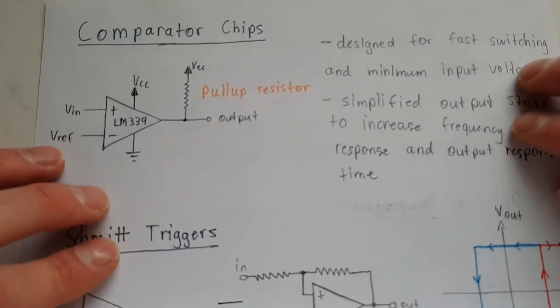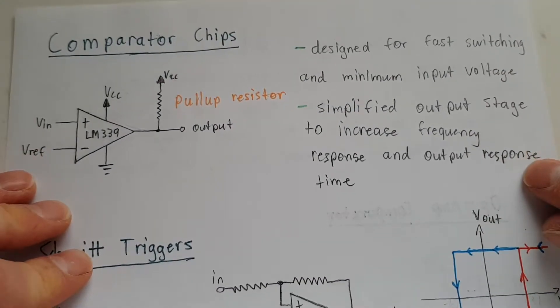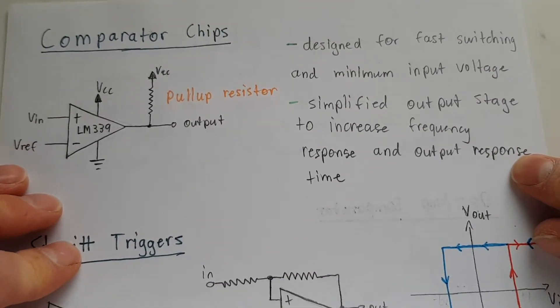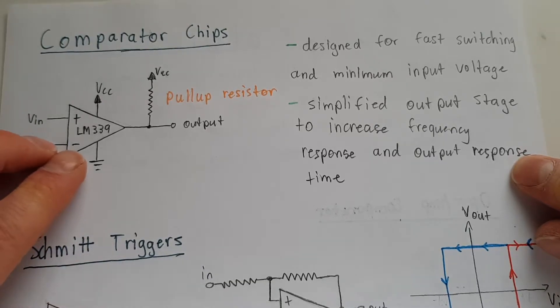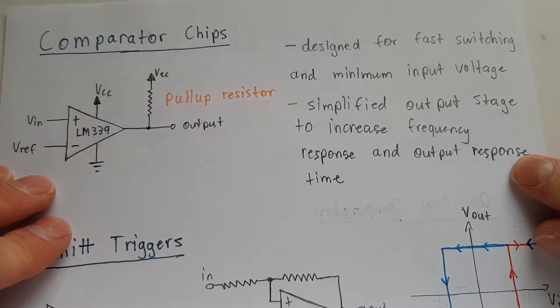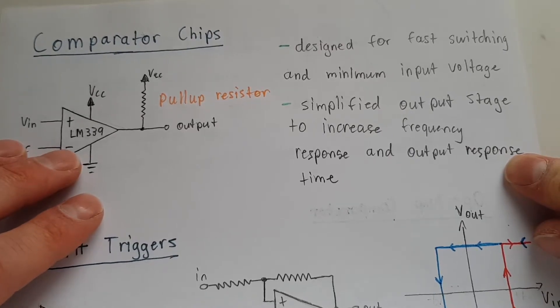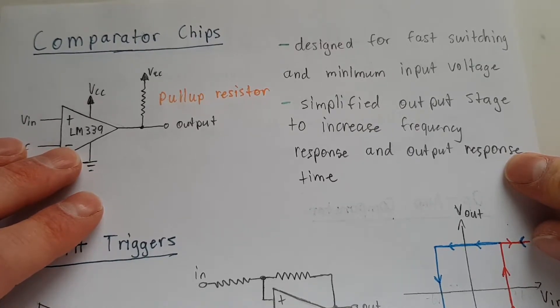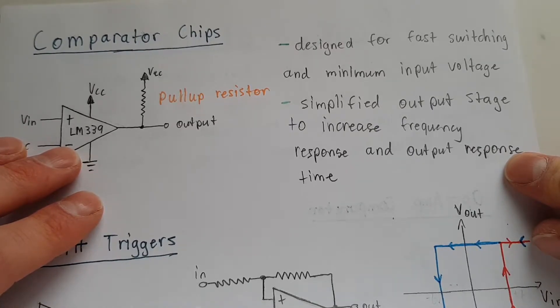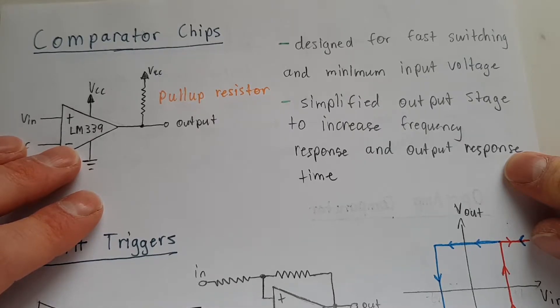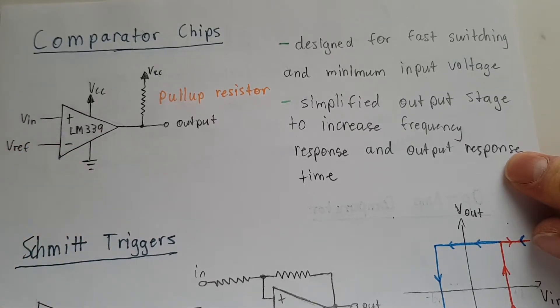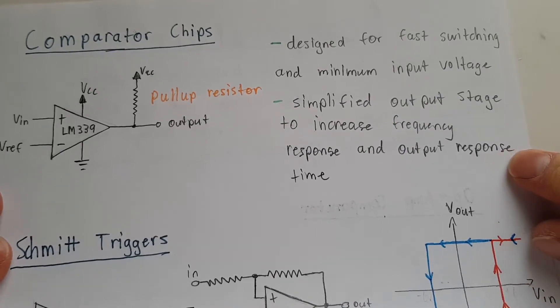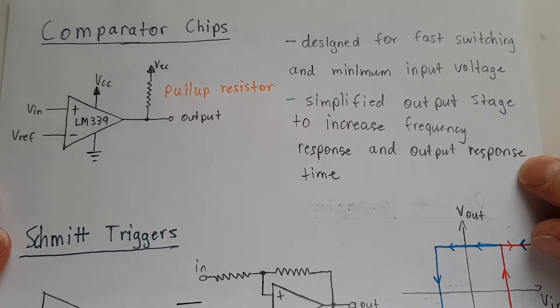Now of course they make comparator op-amps that are specifically designed for this type of thing, like the LM339. I'm sure there's many others. Basically they're designed to not run with a closed loop, and they're designed without a very complex output stage. So you get, the whole thing is just much faster and the switching is a lot cleaner.